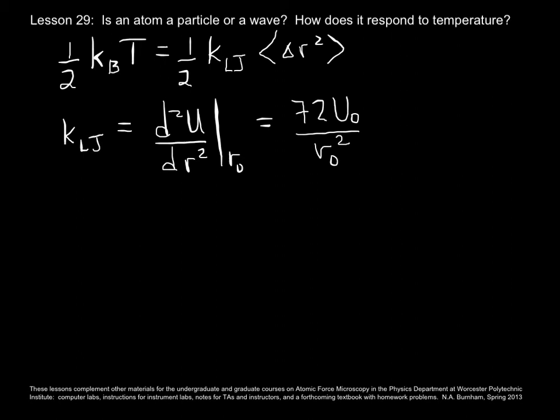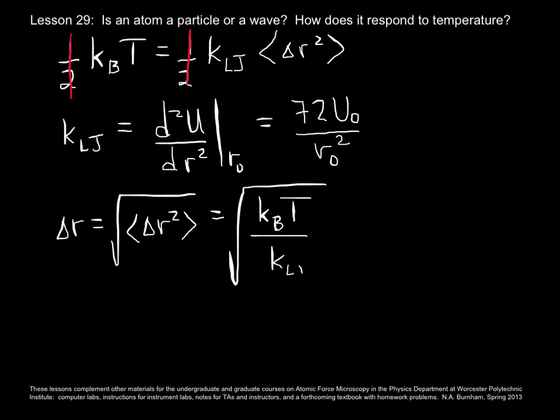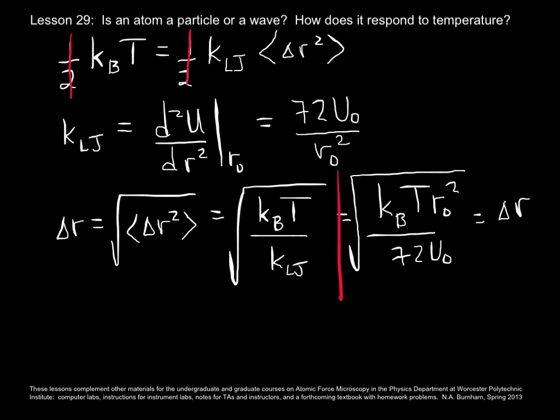A good homework problem is to show that for the Lennard-Jones potential, it's equal to 72u0 over r0 squared. Now using that, we take the first equation, we cancel the one-half, and then we solve it for delta r. It's the square root of the mean square delta r. And so this becomes the square root of Boltzmann's constant times temperature, divided by the spring constant. And now we substitute in the value for the spring constant. We get r0 squared here, and 72u0 here. So that is delta r, which we might informally call jiggle distance.